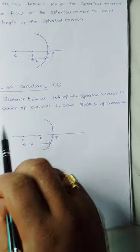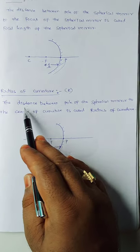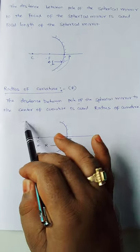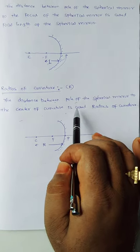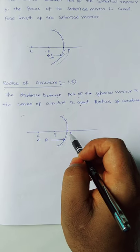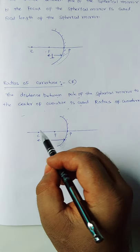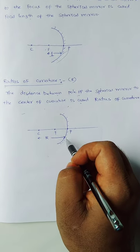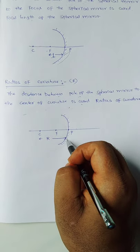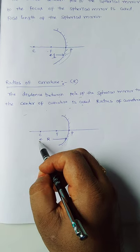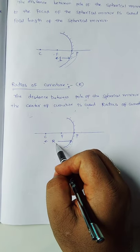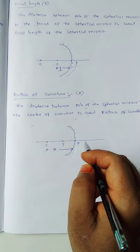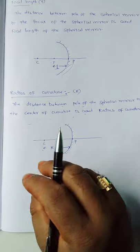Next one is radius of curvature. The distance between the pole of the spherical mirror and the center of curvature is called the radius of curvature. We have the pole, center of curvature, and focus — the distance between the pole and the center of curvature is the radius of curvature.